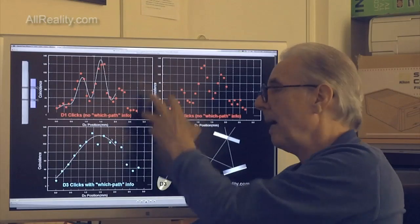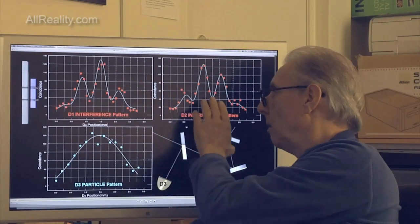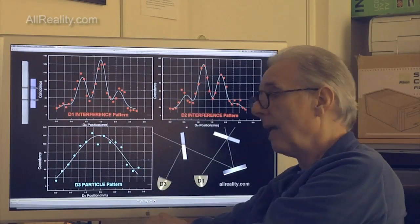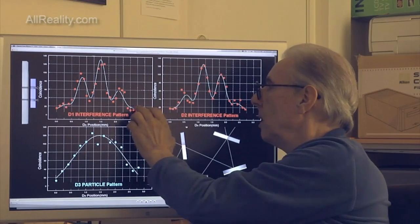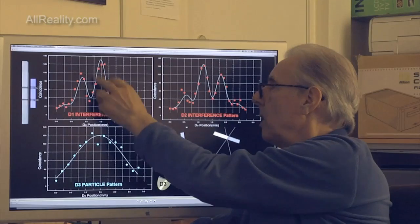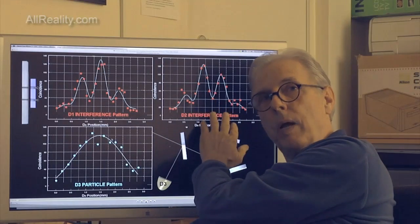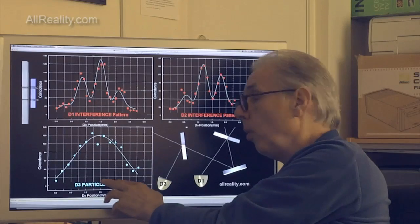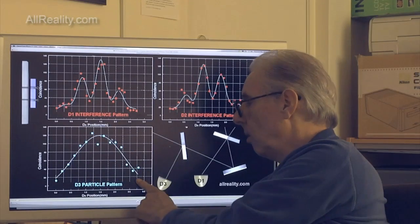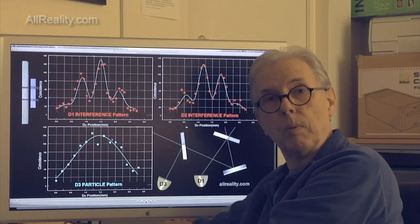Once you've separated out the points and when they're detected, you see that photons that had no which path information forms a fringe pattern. Particles that were detected with which path information forms a particle pattern.